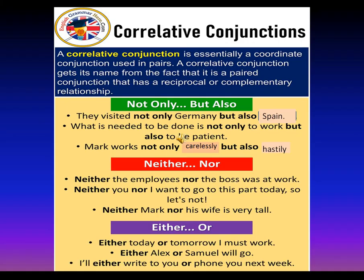Now let's come to the last type: correlative conjunctions. A correlative conjunction is essentially a coordinating conjunction used in pairs — they do not function without their partner. A correlative conjunction gets its name from the fact that it is a paired conjunction, and both words have a reciprocal or complementary relationship with each other.